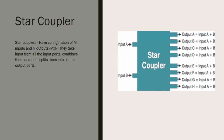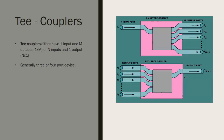Star couplers are similar in function to X couplers. They take several input signals, combine them, and then split them into several output signals. Each output signal is a combination of all the input signals. They can be configured as M by N couplers, where M indicates the number of input ports and N indicates the number of output ports.